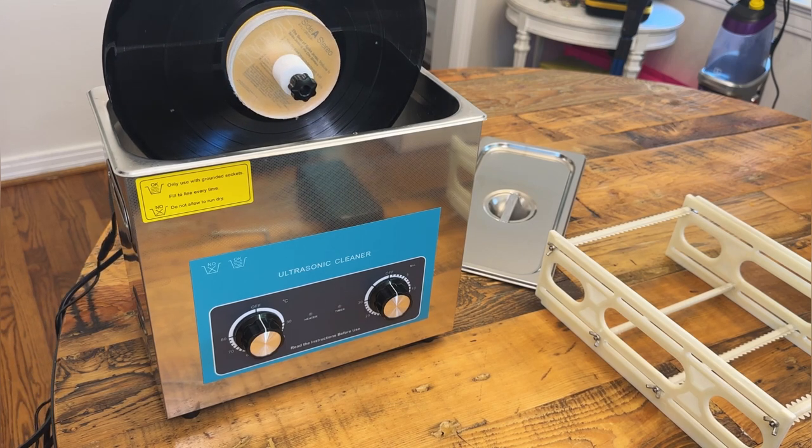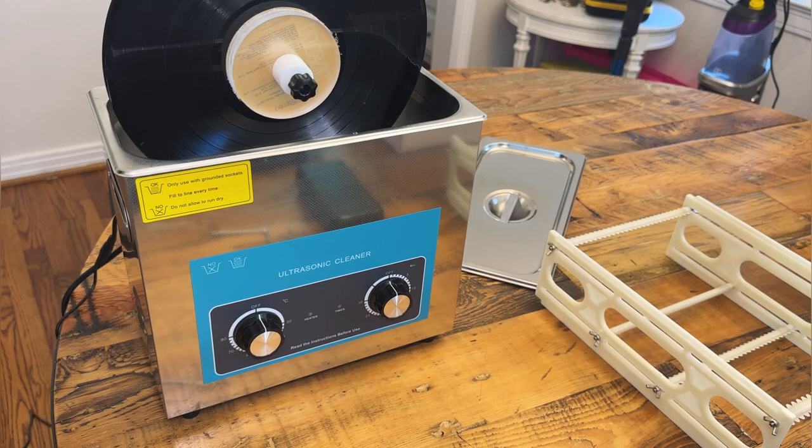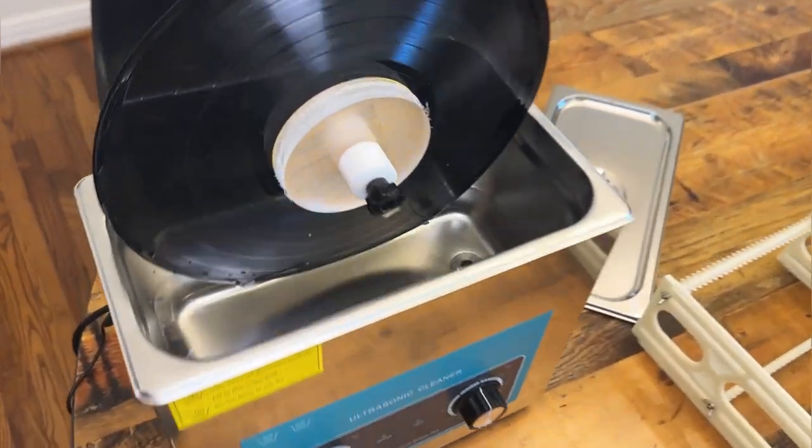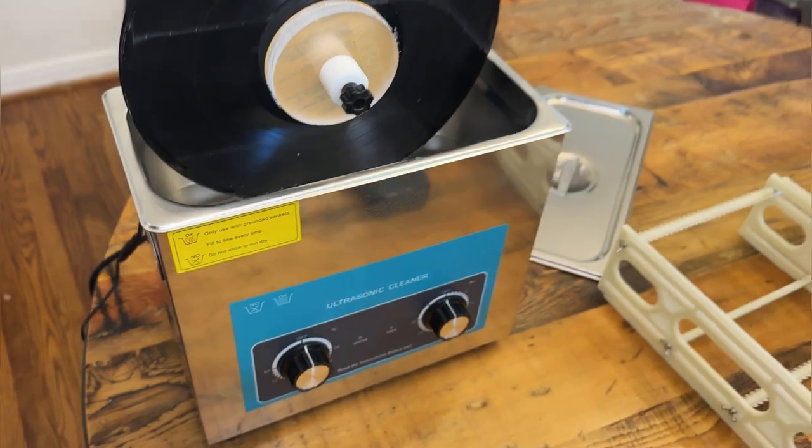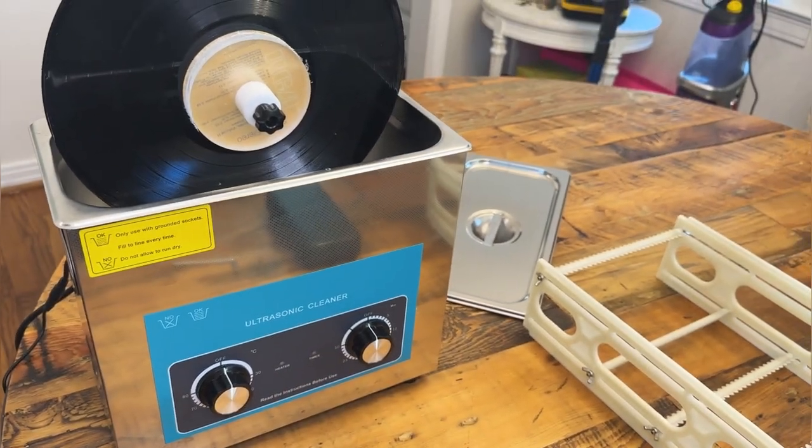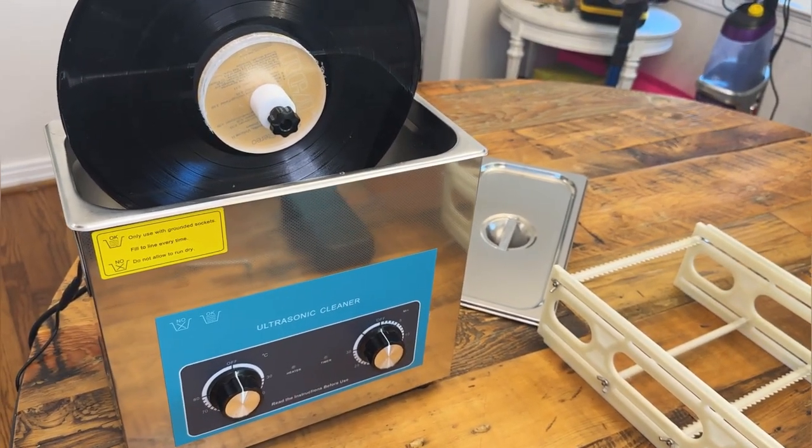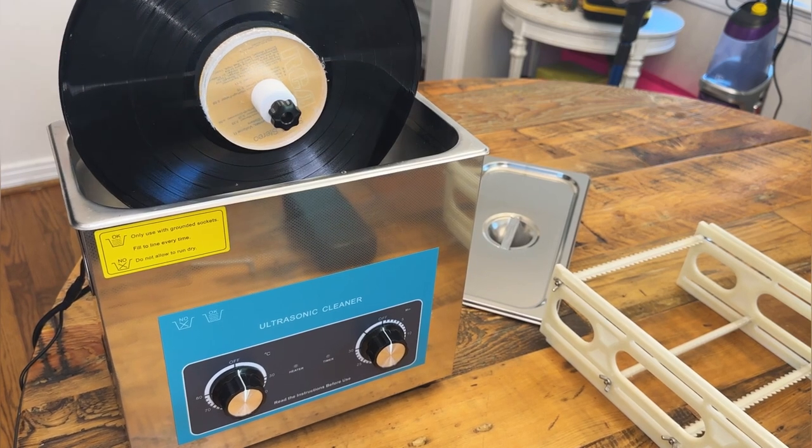There our record goes and it's turning. We've got some water in our tank. You can see we just have regular distilled water here. We're gonna put a couple of drops of dish soap in there and that's what we're gonna use to clean our record.